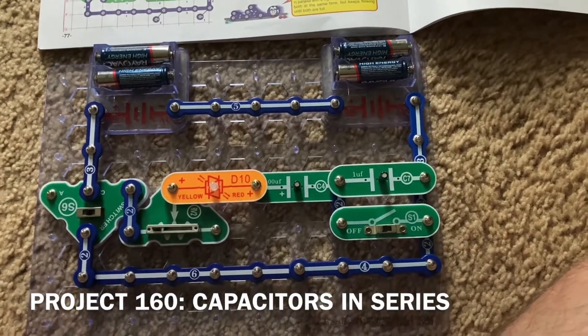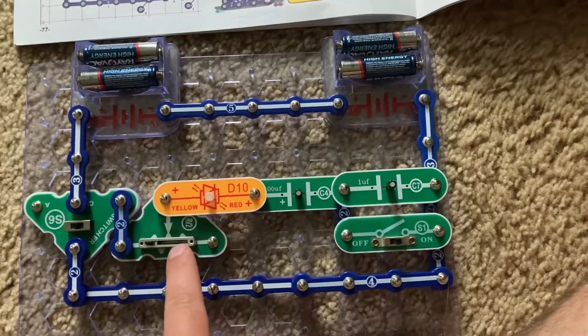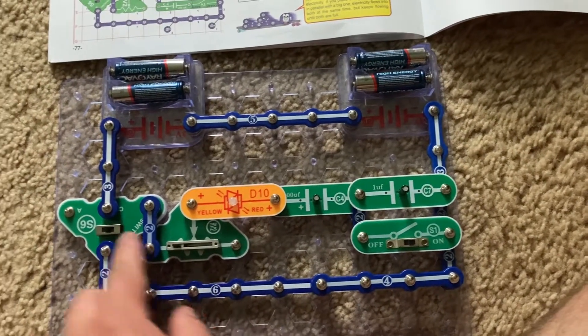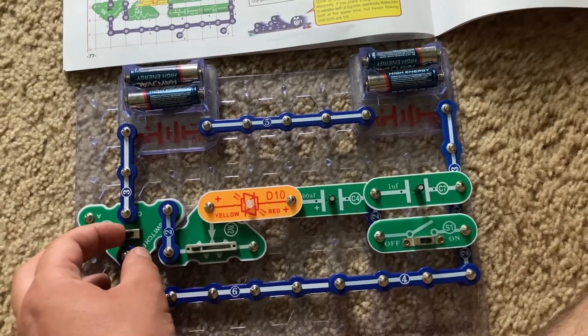Project 160 is capacitors in series. I'm going to turn on the slide switch. The RV2 lever will be on the very left position and then I'm going to move the switcher toward my right.